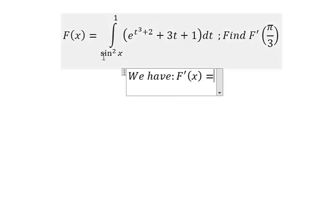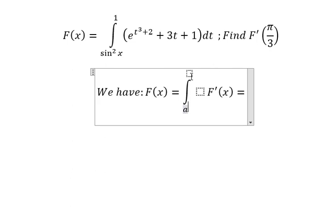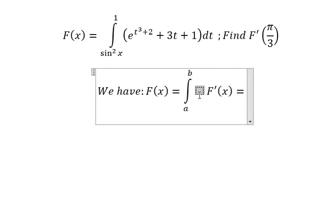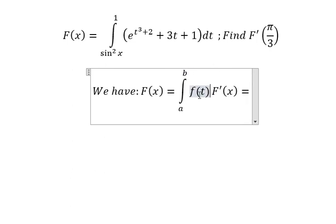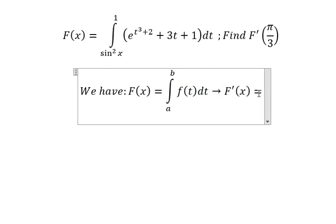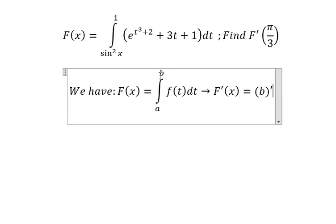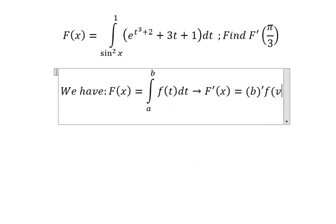If we have the integral of F(x) equals to the integral from a to b and we have F of t dt. If we do first derivative of this one, so we do first derivative of b and later that the value of b we will replace for t. So you got about F of b.